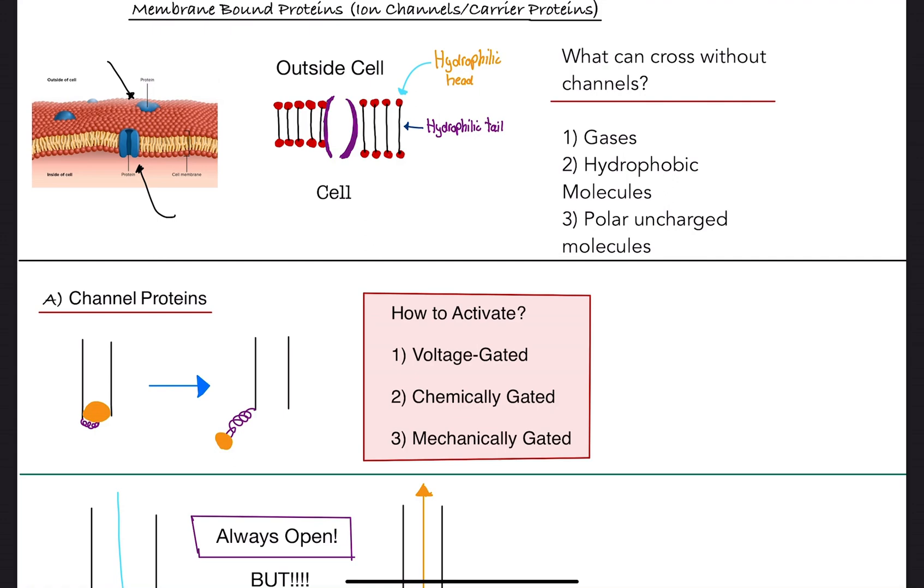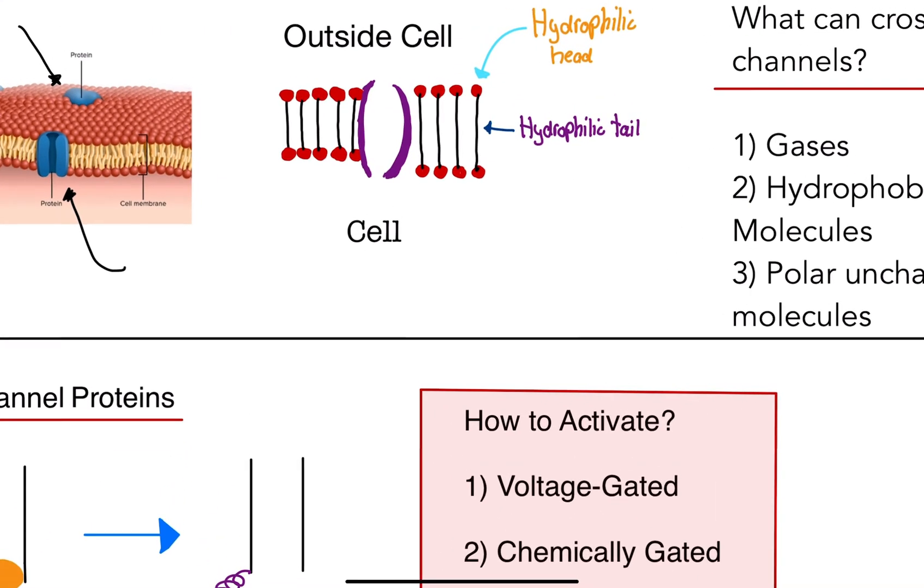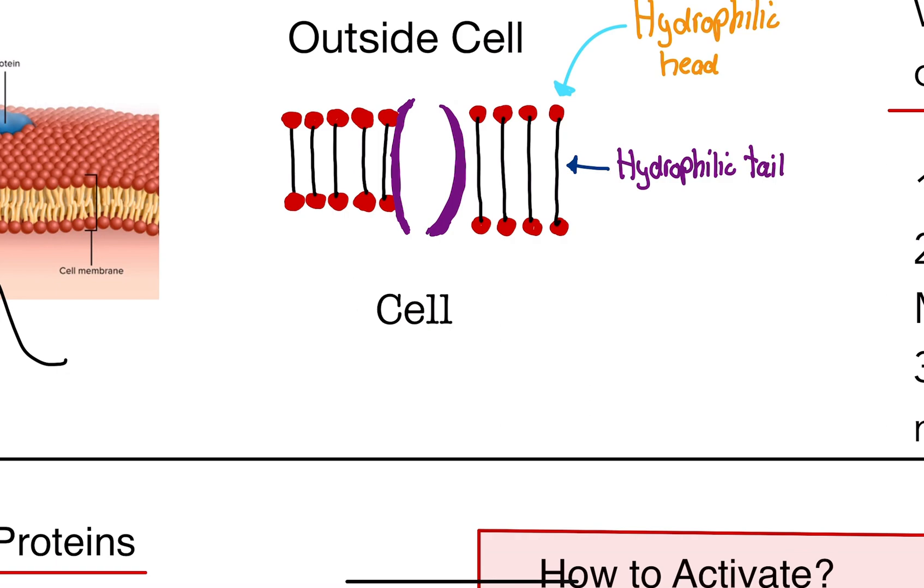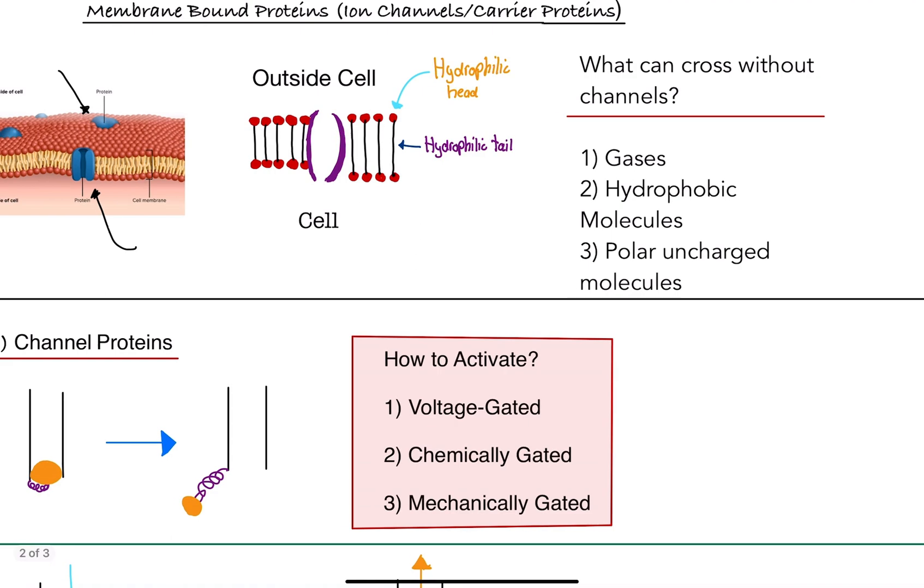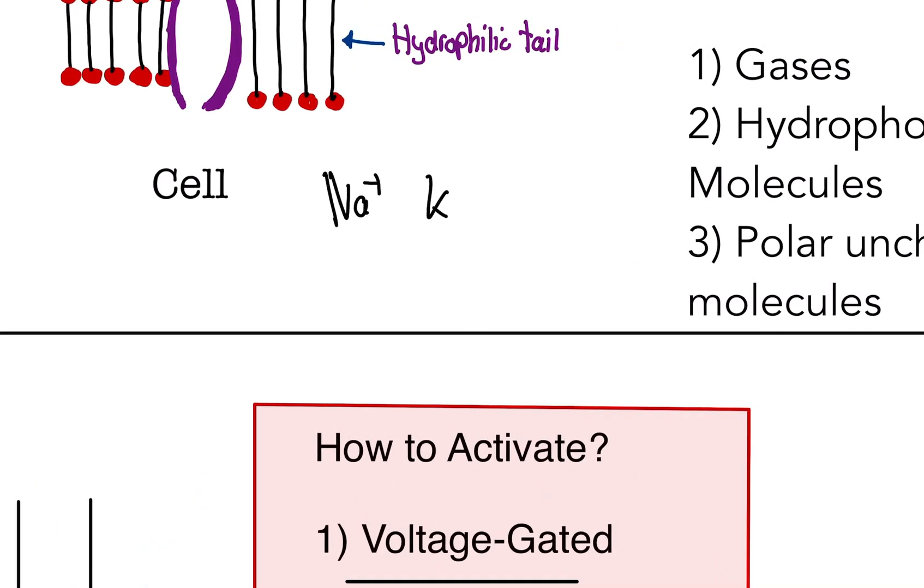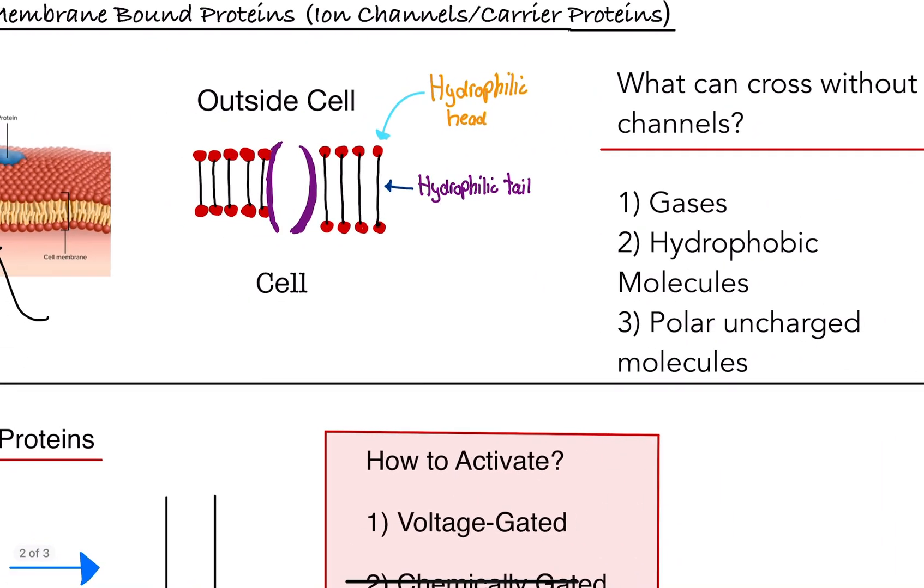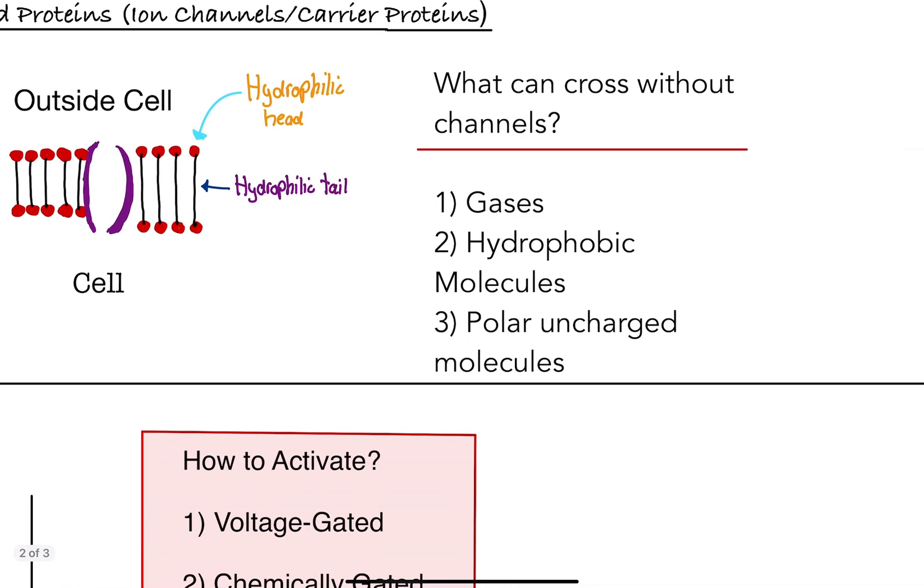So the first thing we need to understand is what can cross without channels. So channels are basically, think about as a tunnel system for things to go in and out of the cell. So ions require these channels, like sodium, potassium, chloride, hydrogen ion, all this kind of stuff requires this channel. It cannot naturally go through this lipid bilayer. It's not possible. So it requires basically like an underground tunnel to get to point A to point B. What can cross without the channels? Like what can just go naturally through the bilayer?